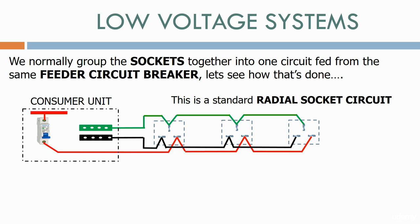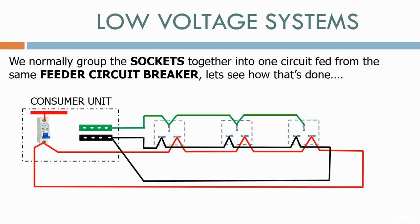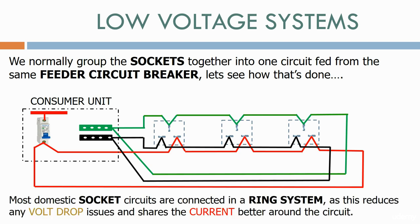To turn a radial socket circuit into a ring socket circuit, we simply loop back the live, neutral and ground wires to the consumer unit. We now have a ring system, with power flowing into the loop from both directions at the same time. Most domestic socket circuits are connected in a ring system, as this reduces any volt drop issues and shares the current better around the circuit.